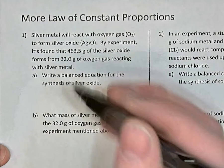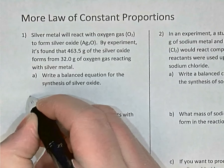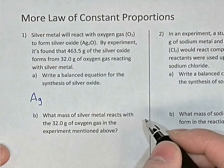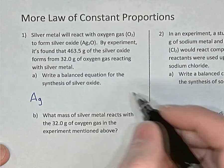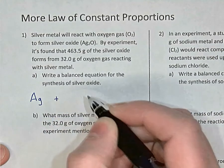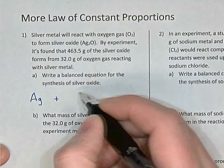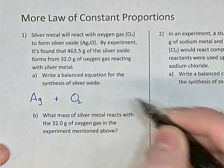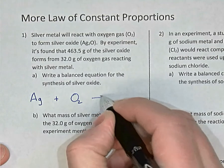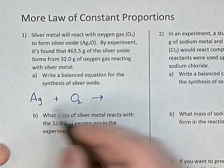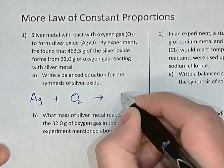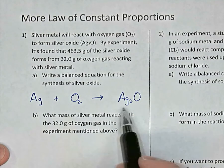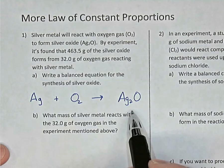Silver is reacting with oxygen. Silver is just the element, so we write its chemical symbol from the periodic table: Ag. Oxygen is one of the diatomic elements, so it's not just O — it's written as O₂. And it forms silver oxide, whose formula we're given: Ag₂O. So we have two elements combining to make a compound, silver oxide.